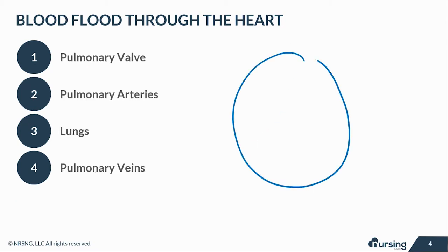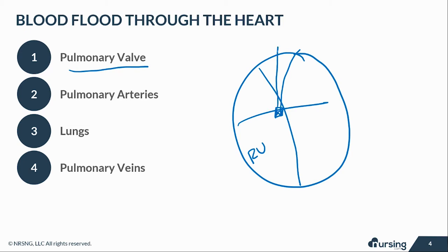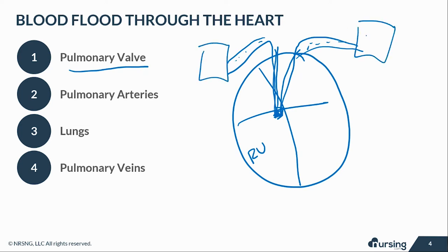After the blood has entered the right ventricle, it has to go through the pulmonary valve and then through the pulmonary arteries — one goes to the left lung and one goes to the right lung. This is where gas exchange occurs, where oxygen and CO2 diffuse. After this happens, the left and right pulmonary veins bring the blood back to the left atrium.